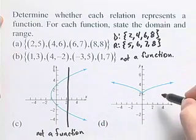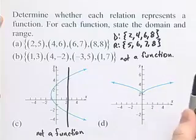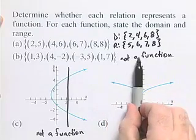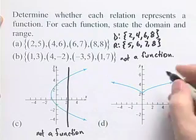In part D, we're also given a graph. If we imagine a vertical line and we slide that, there's no place along this graph where we can hit the graph in more than one place. And so this is the graph of a function.